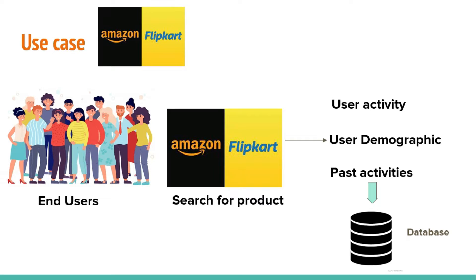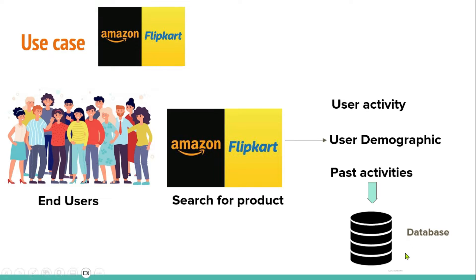Let us consider this Amazon website use case. Nowadays we all prefer online shopping. So here we are the end user. Whenever we search for any product on the website, our data gets stored in their database. The data related to our activities — like how many times we have visited, which product we have clicked, or how was our engagement — all data is stored in the user activity table. Then data related to location, gender, and age all get stored in the user demographic table. And the data related to the past activities is stored in the past activity table.